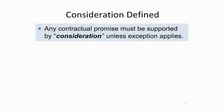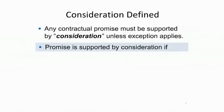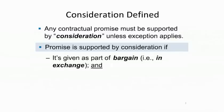Any contractual promise must be supported by consideration from the other side, except in those relatively unusual cases where some exception to the consideration requirement applies. This means you have to know when a contractual promise is deemed to be supported by consideration. A promise will be supported by consideration from the other side only if two things are true. First, the promise must be given as part of a bargain.